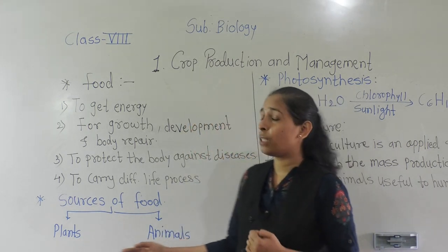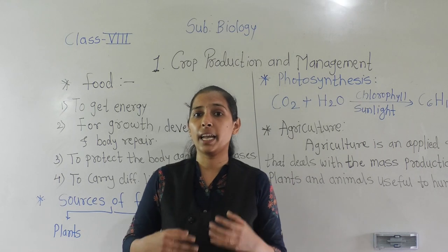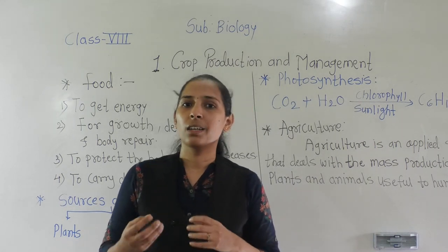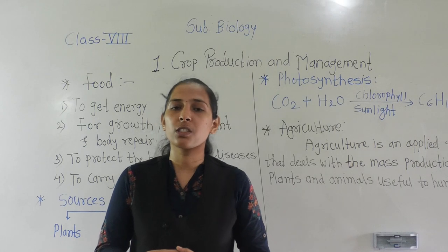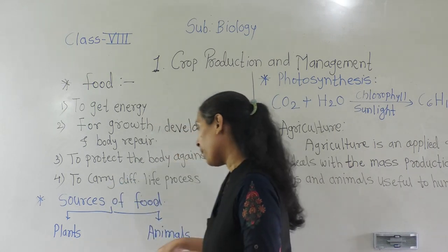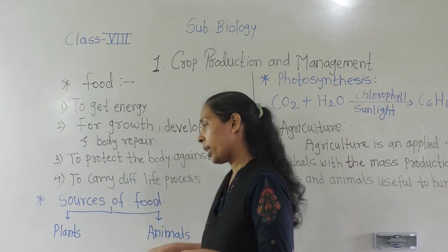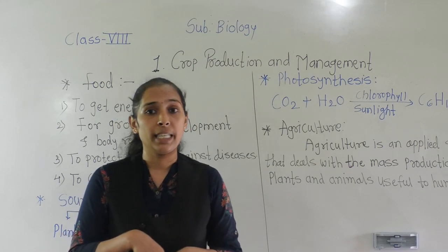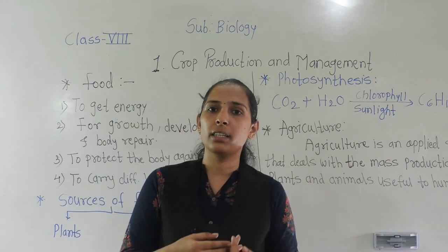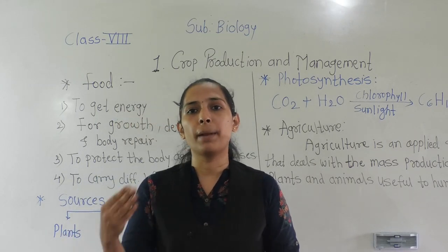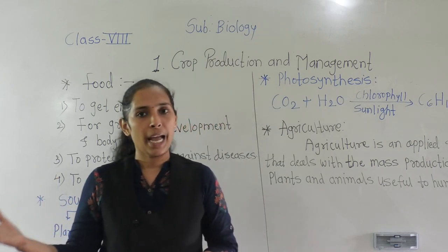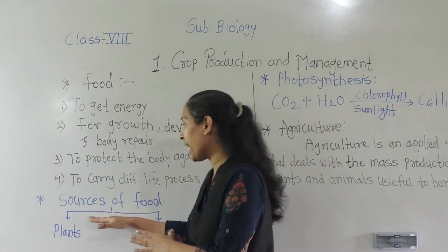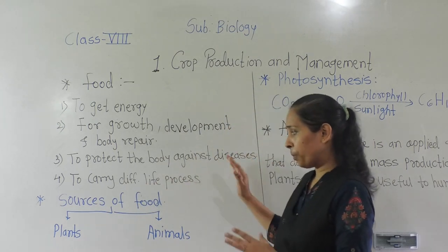From animals we can get egg, meat, fish, milk, and honey. All these are the foodstuffs that we are getting from animals. So whatever we have in our daily diet, either it comes from plants or it comes from animals. So plants and animals are the main sources of food.